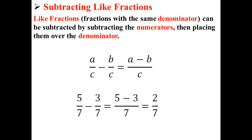Here, we have a real example. 5 over 7 minus 3 over 7 is equal to 5 minus 3 over 7, or simply 2 over 7.